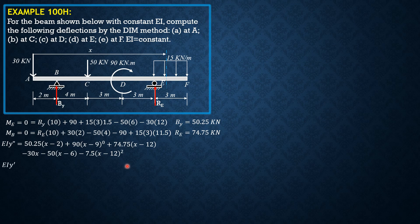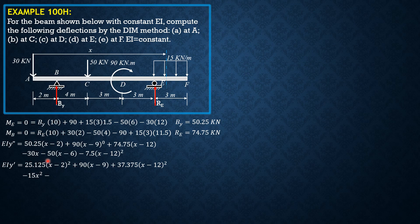Integrating once: EI Y prime equals 25.125(X minus 2) squared plus 90(X minus 9) plus 37.375(X minus 12) squared minus 15X squared minus 25(X minus 6) squared minus 2.5(X minus 12) cubed plus C sub 1. There is C sub 1 because A is not a support — it will deflect. In the interpretation, C sub 1 is theta A.